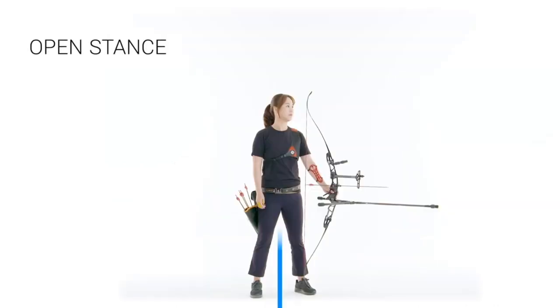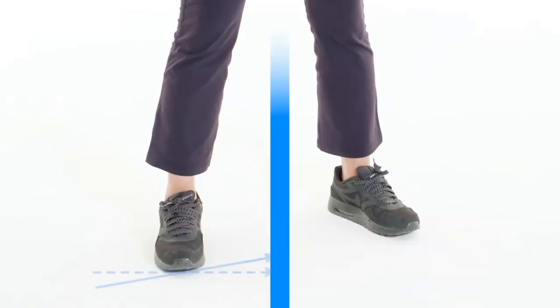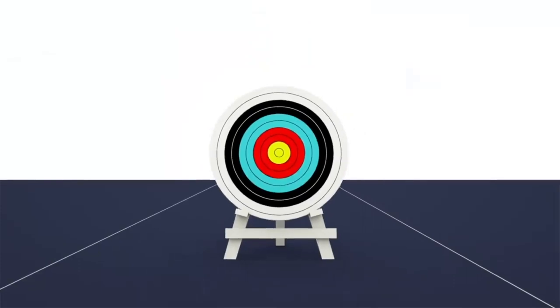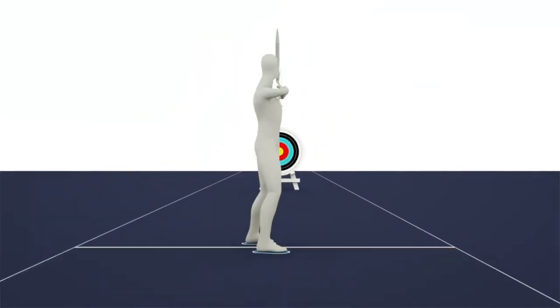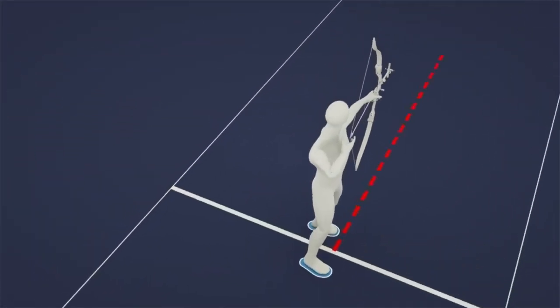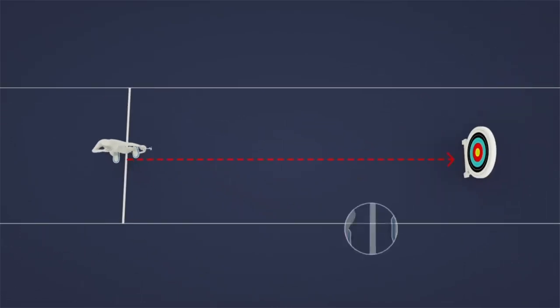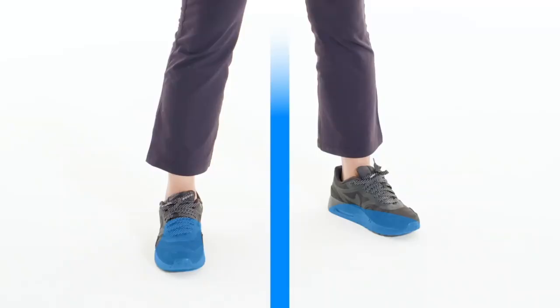Open stance is when the tip of an archer's front foot is moved back to be in line with the centre of their back foot. This results in their body being angled more towards the target whilst straightening the upper part of their body when shooting. This position can be adjusted by changing the angle to the target.